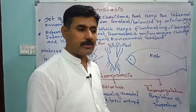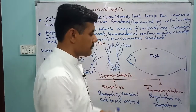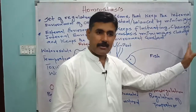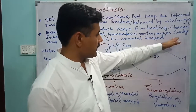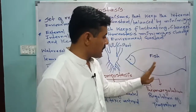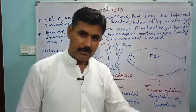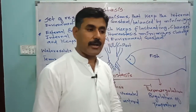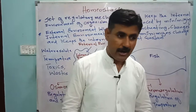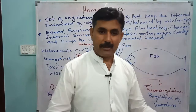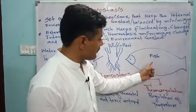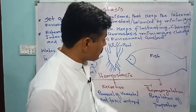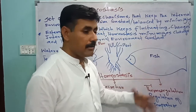When there are fluctuations in the environment, water can move from the hypotonic environment into the body, where the environment is hypotonic. If the internal water of the organism increases, that can make organisms die. So the organism removes excess water to maintain its internal water balance.